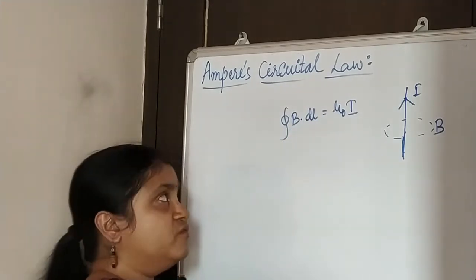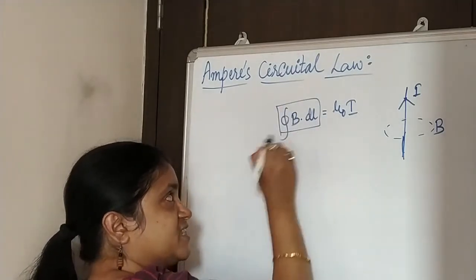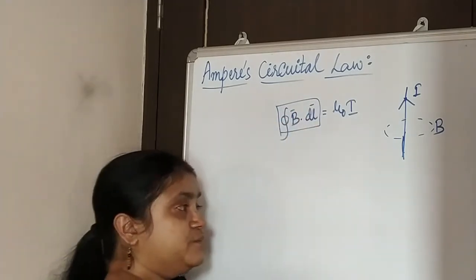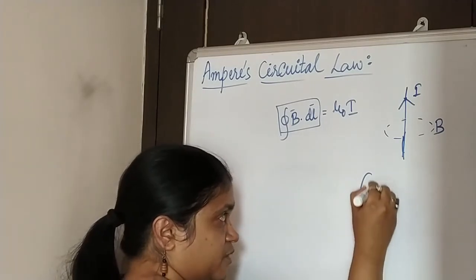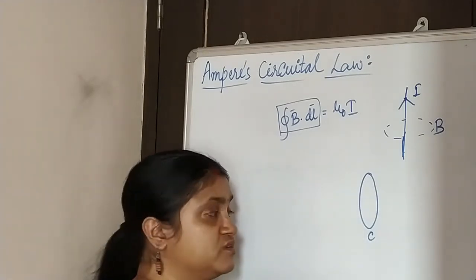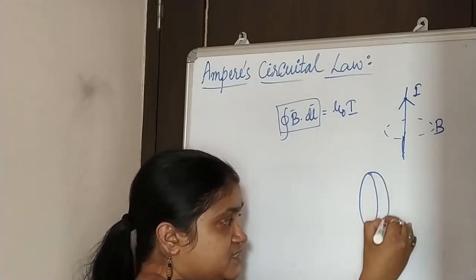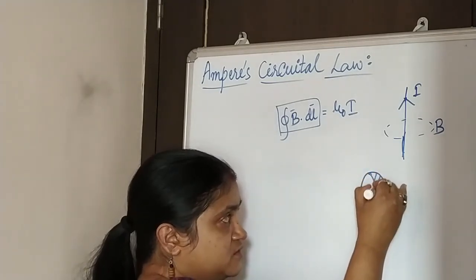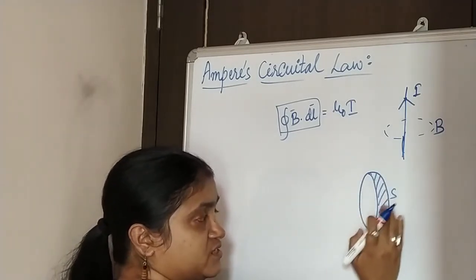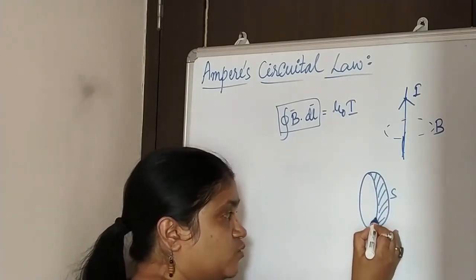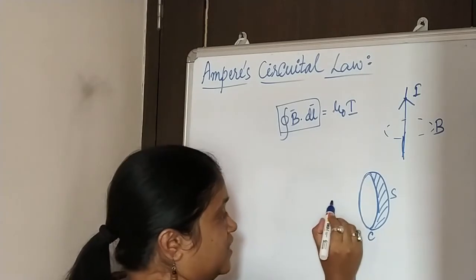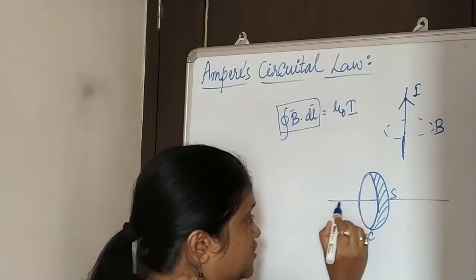Before understanding this law, first we have to understand what this expression means. Here both are vector quantities. Let's suppose we have a surface which has a boundary C. This is a circular boundary which is C, and this has an enclosed surface area S. This is a surface with surface area S which has this outside boundary or the surface boundary denoted as C. A current I is passing through this.